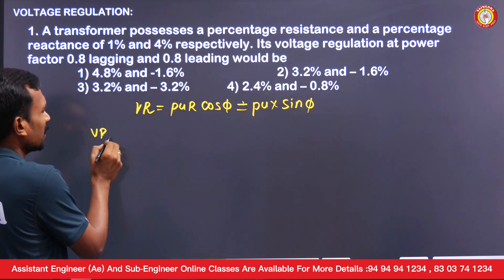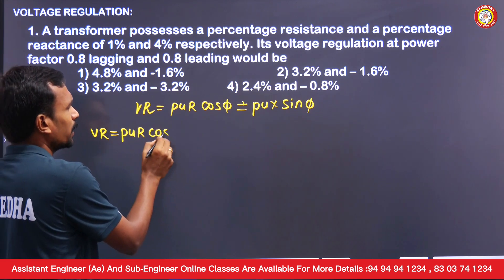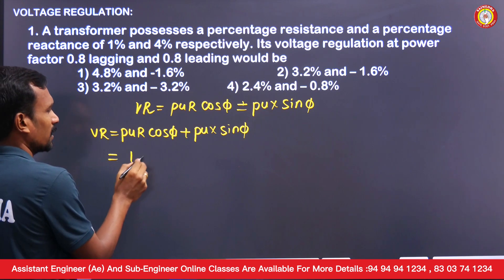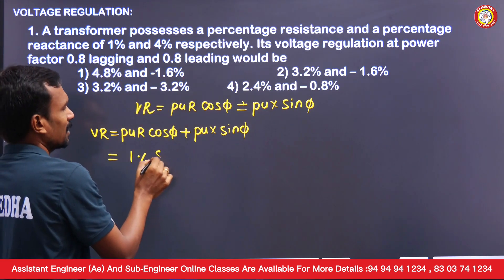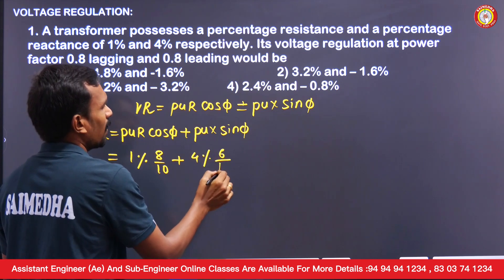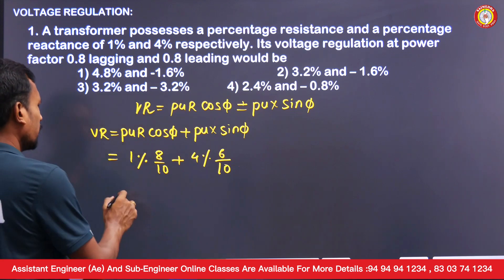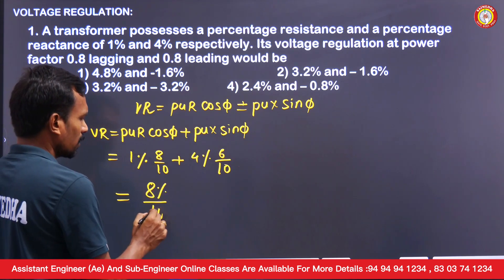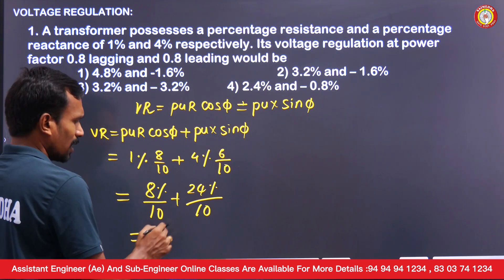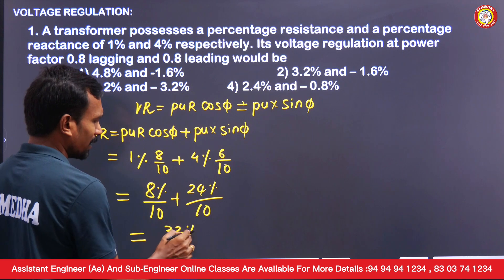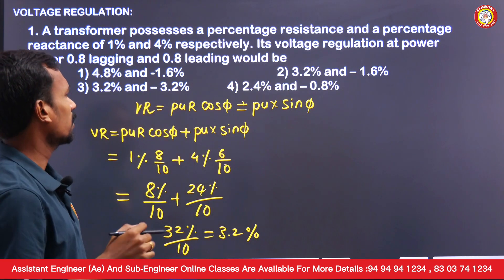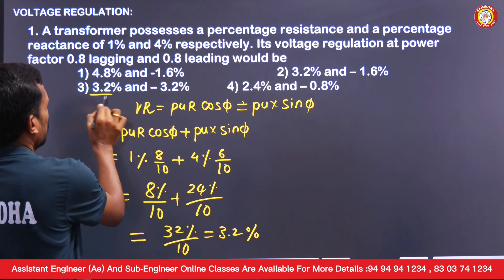For lagging load, voltage regulation = per unit R × cos φ + per unit X × sin φ. Per unit R is 1%, cos φ is 0.8, per unit X is 4%, and sin φ is 0.6. So the calculation is: 8%/10 + 24%/10 = 32%/10 = 3.2%. For lagging load, the voltage regulation is +3.2%.